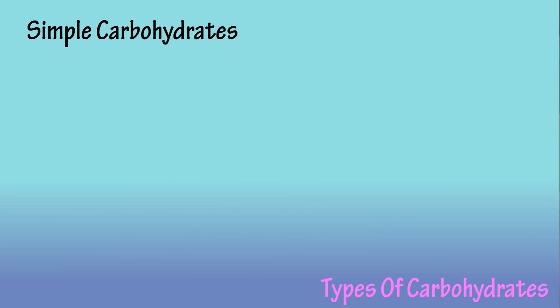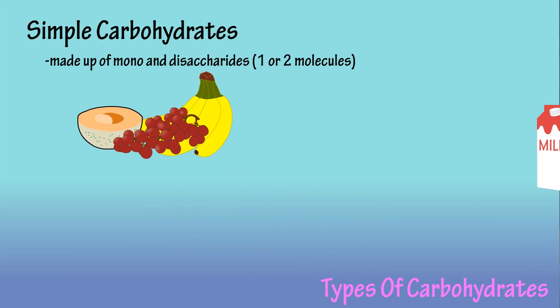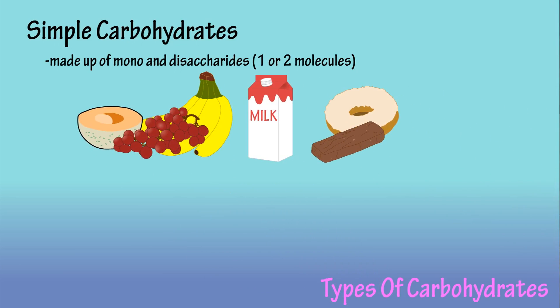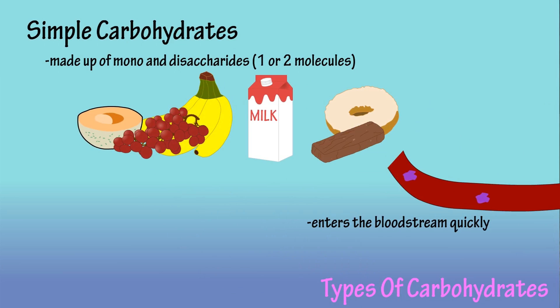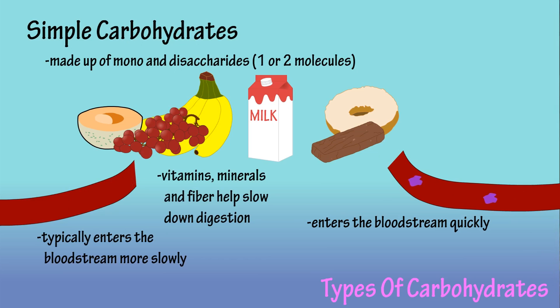Now that we have that out of the way, let's look at simple carbohydrates. Simple carbohydrates are made up of mono and disaccharides — one or two molecules. Some foods include fruits, milk, and foods with high amounts of added sugars. Typically, simple carbohydrates are easily absorbed into the bloodstream because of their simple molecular structure. However, when you obtain simple carbohydrates from whole foods, they are usually combined with vitamins, minerals, and fiber, which slows down the digestive process.